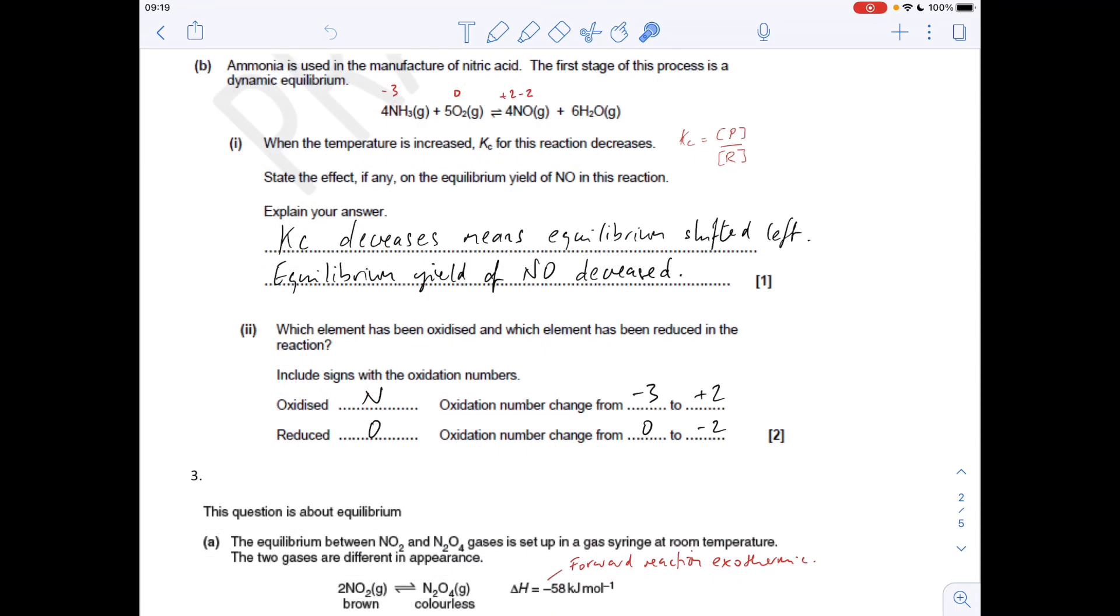Okay, so the next part of the question is about redox. We've got to identify the element oxidized and reduced, and include oxidation numbers with their signs to justify our answer. So you can see I've written up the oxidation numbers here. The oxidized atom or element is nitrogen. It starts out at negative three and goes to plus two, so that's an increase in oxidation number, hence oxidation.